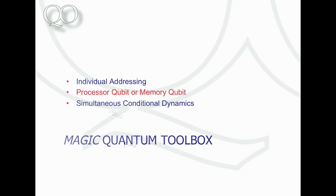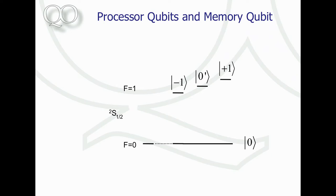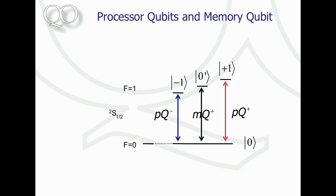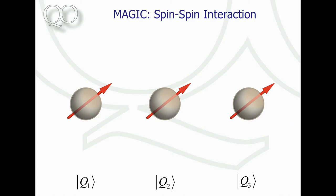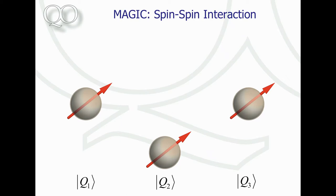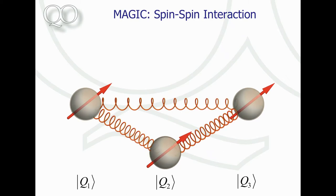Individual addressing is demonstrated. Since we have three hyperfine states with different dependencies on the magnetic field — no dependency, positive, and negative — we can have so-called memory qubits with no magnetic field dependence for storage, and processor qubits with magnetic field dependence for interaction. By simply recoding our qubit in a stationary string of ions, we can go from a storage qubit to a processor qubit and vice versa. To demonstrate this using three ions, we symbolize them as spins with mutual spin-spin couplings.